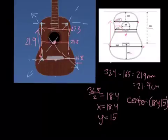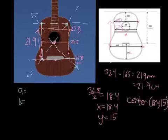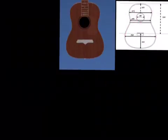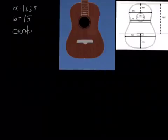In order to find your A and B, since the hyperbola of the guitar is on the x-axis, you know that A would be your x and B would be your y. A would be from the center to the width of your guitar, which is approximately 12.25 centimeters. For your B, it would just be from the center down, which we already found was 15 centimeters. So A equals 12.25 and B equals 15, and the center is (18.4, 15).